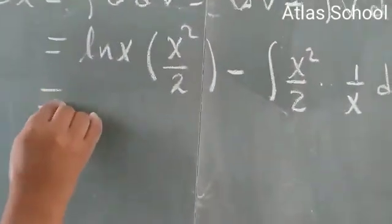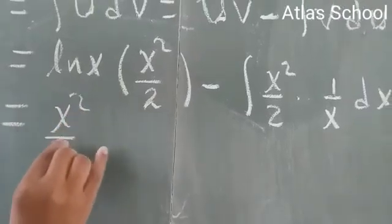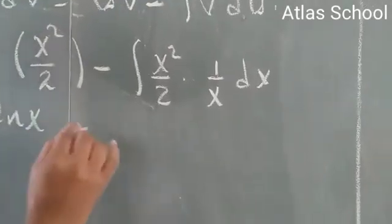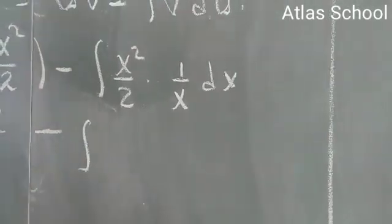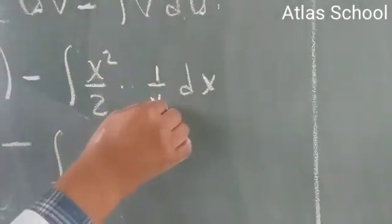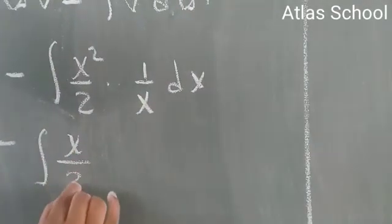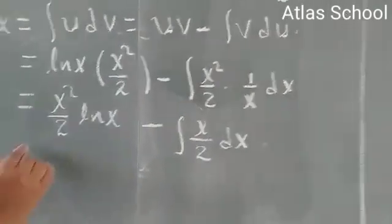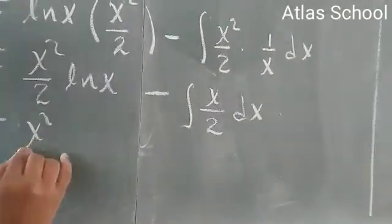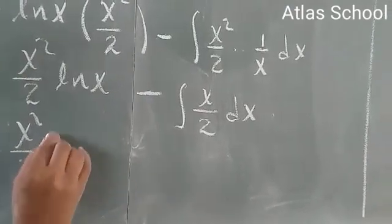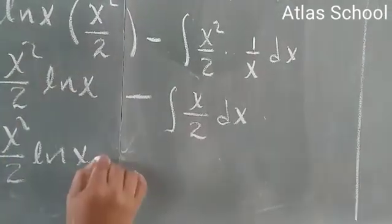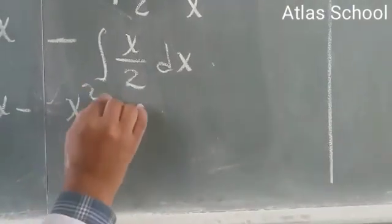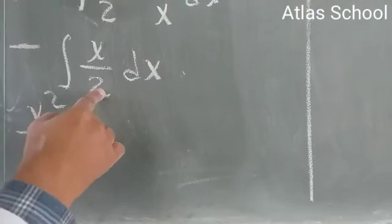Then this result should be x squared over 2 ln x minus the integral of x squared over x. It becomes x over 2 dx. Now this should be x squared over 2 ln x minus the integral of this one becomes x squared over 2. Here we have 2 and the degree of x is 2.